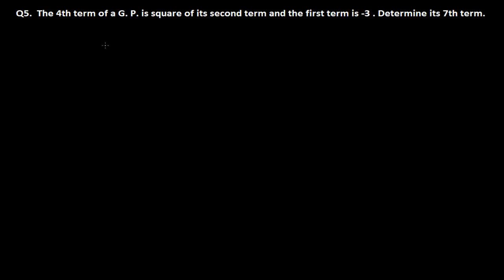Welcome friends, once again in another problem of geometric sequence. The question says: the fourth term of a geometric progression is the square of its second term, and the first term is minus 3. Determine its seventh term. So first let's write whatever we have got here.